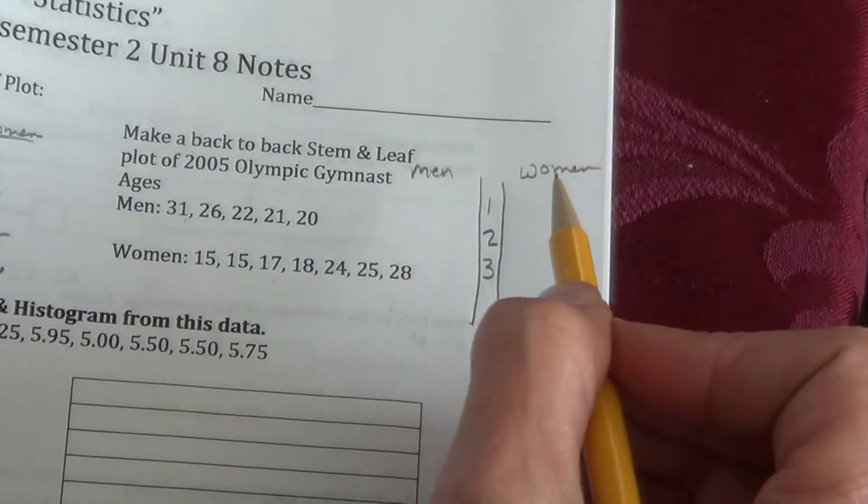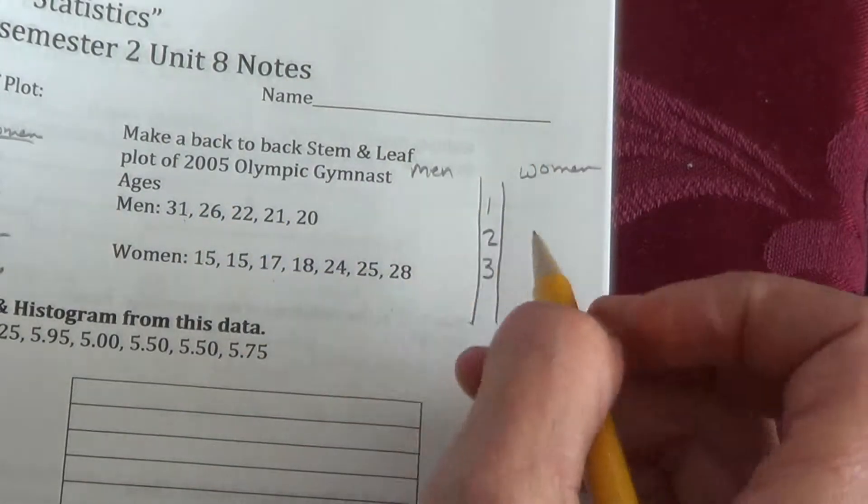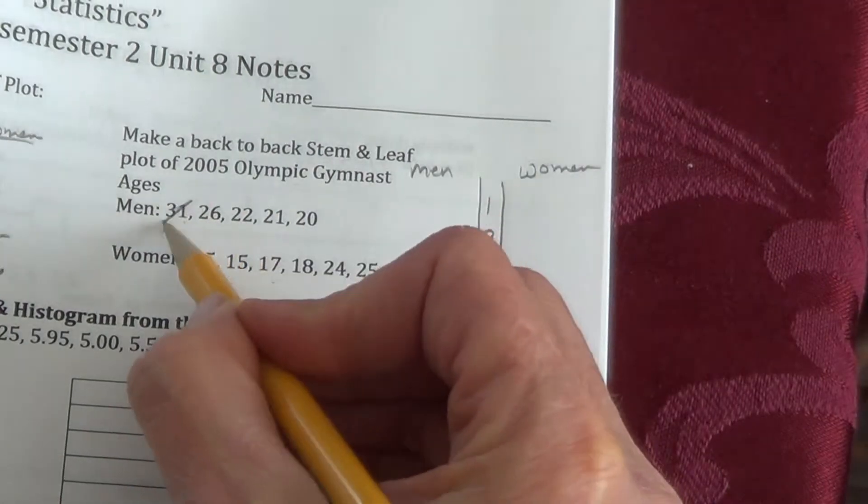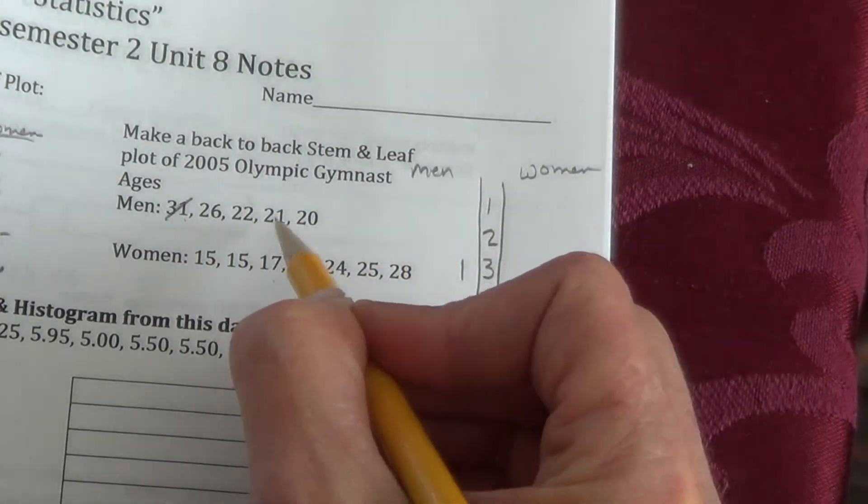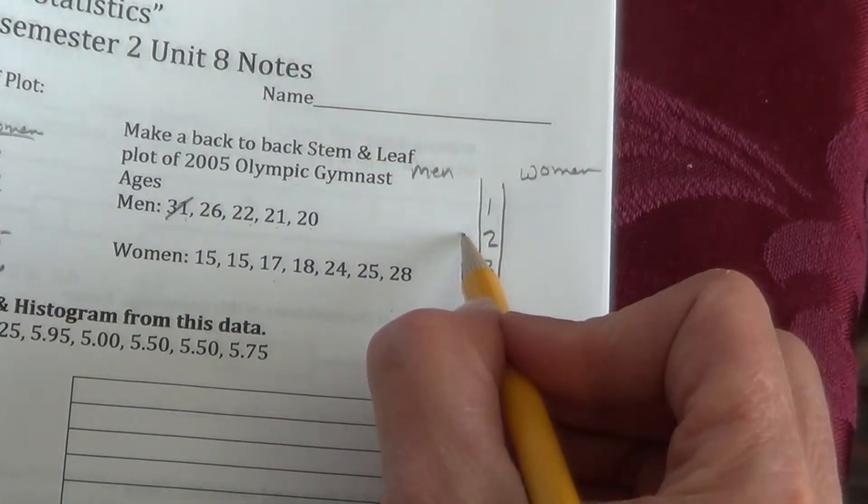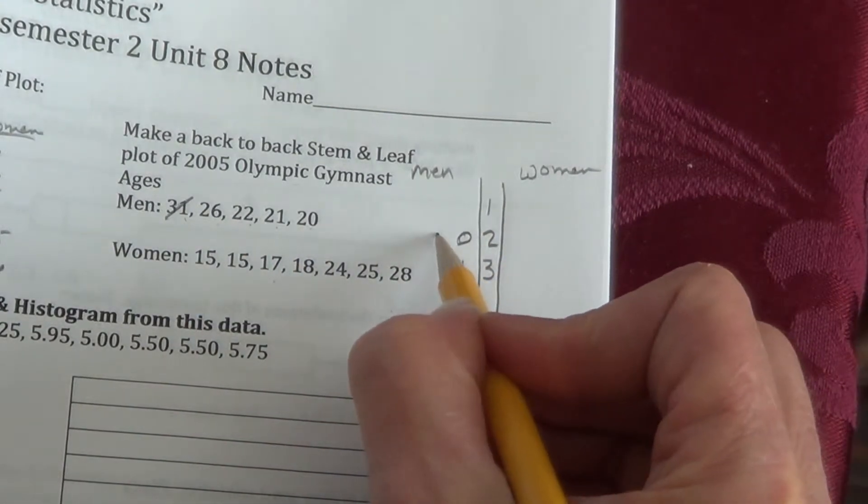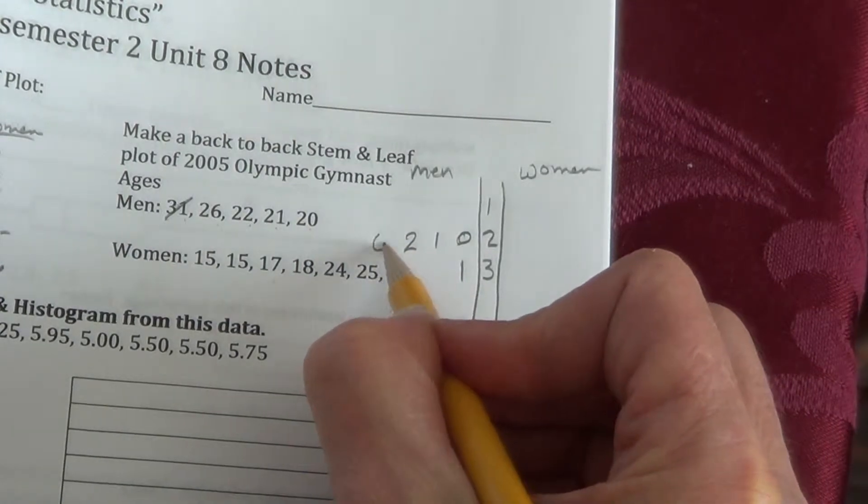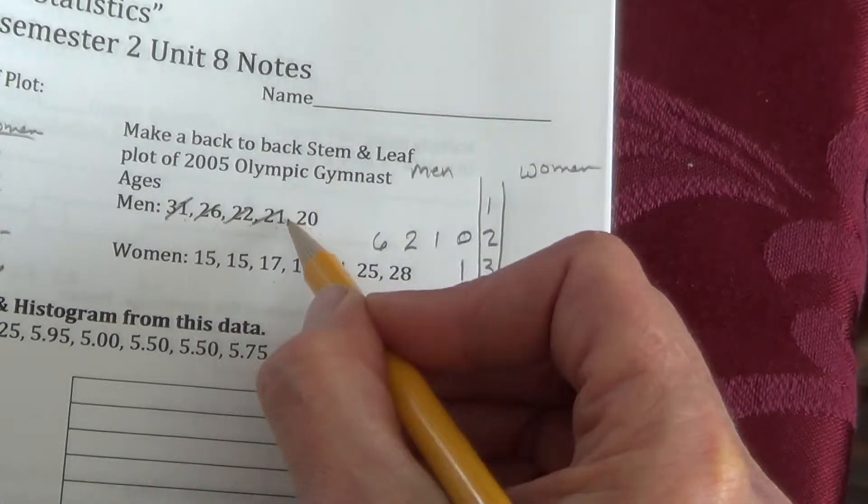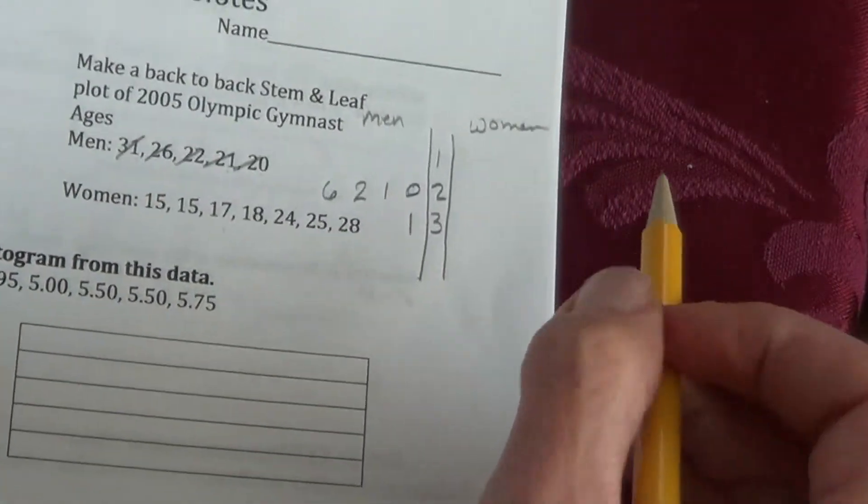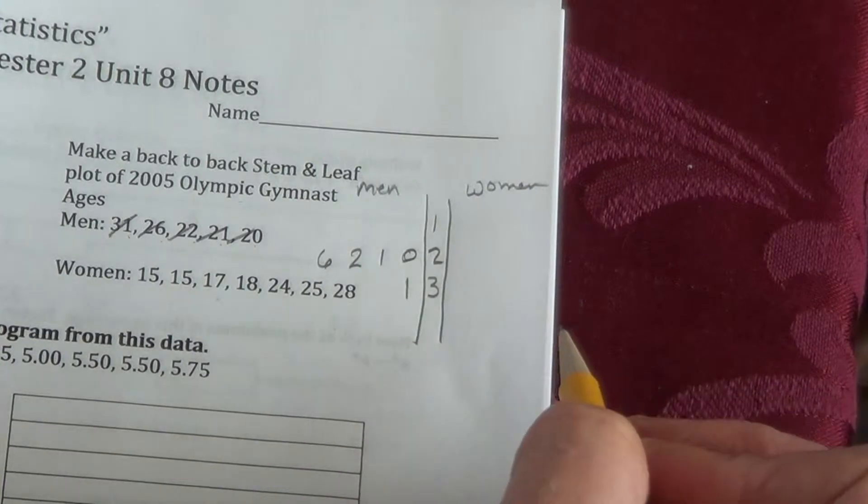Now in the 2005 Olympics for the gymnasts, we have 31 for the men. 20, 21, 22, and 26, so 20, 21, 22, and 26. Again, we don't have men in that teenage range. Some of you may have an idea of why, I'd be curious what you think.